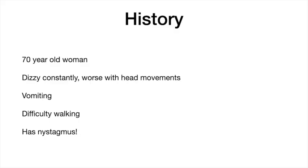First, of course, the history should be consistent with the acute vestibular syndrome. This seventy-year-old woman got out of bed that morning and felt very dizzy, which was worse with head movement, somewhat better when still, but never completely resolved. She had vomited and had some difficulty with gait, but was able to walk unaided. A quick glance at her eyes showed horizontal nystagmus with a fast component beating to the left.